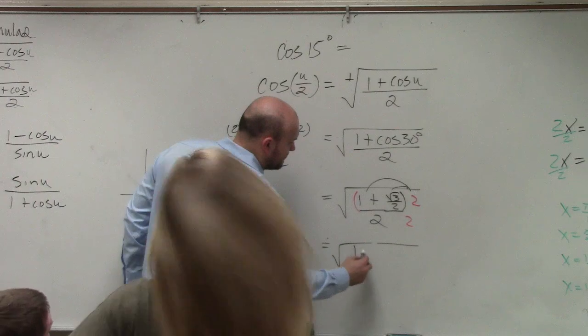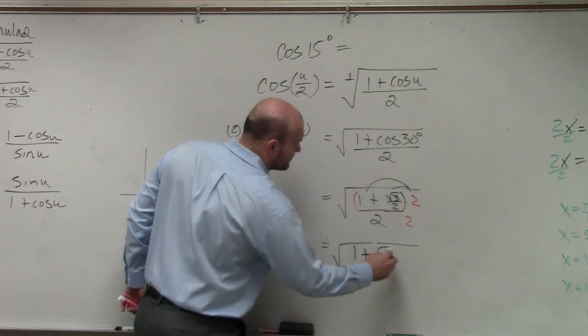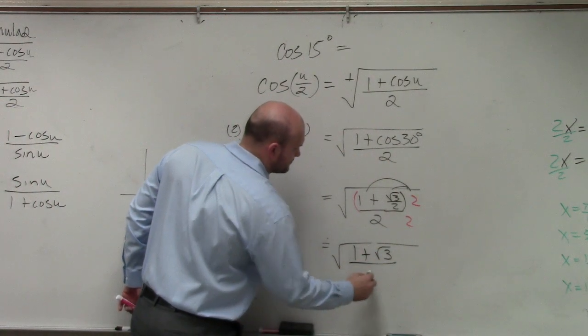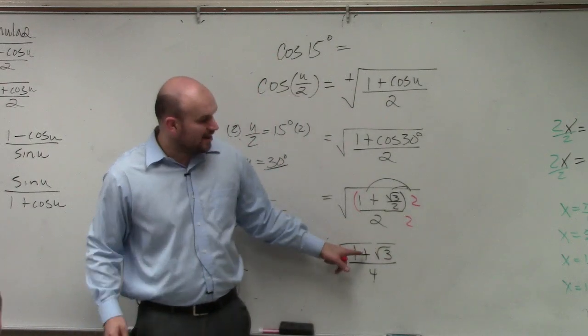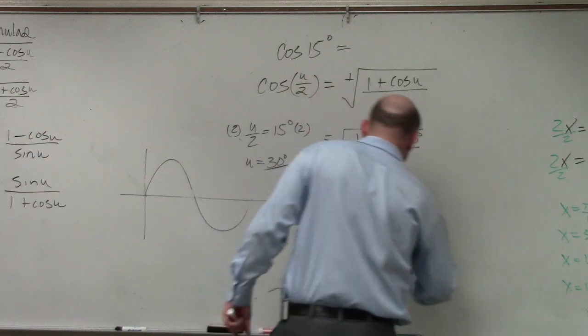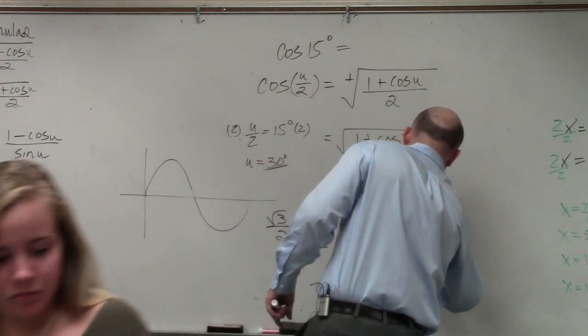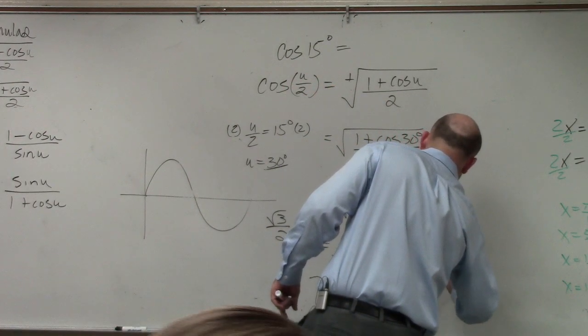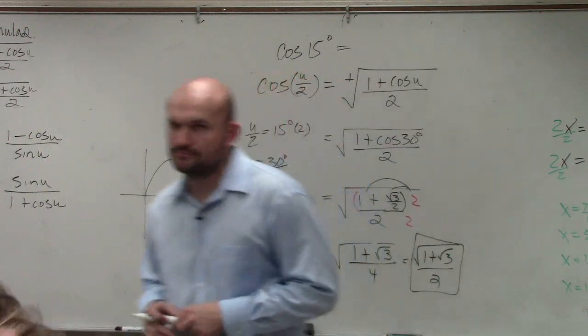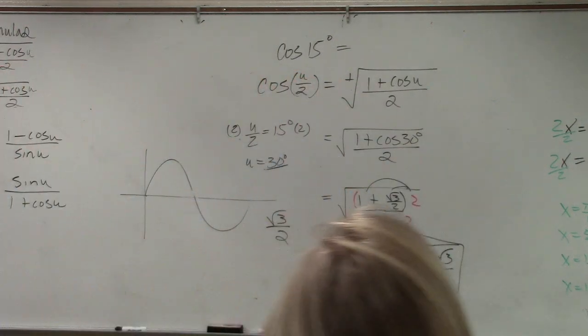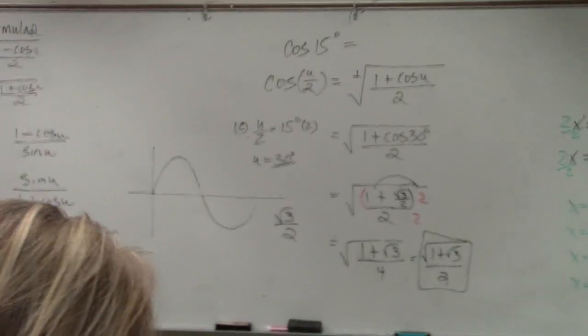So therefore, you have 1 plus. Now, you've simplified this. Your final answer is going to be the square root of 1 plus the square root of 3 over 2. Now, I'll turn off my recording since I've had.